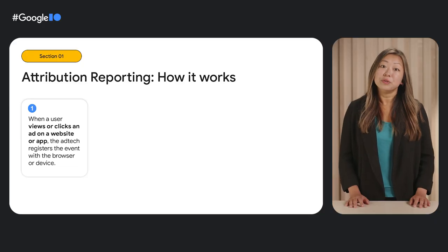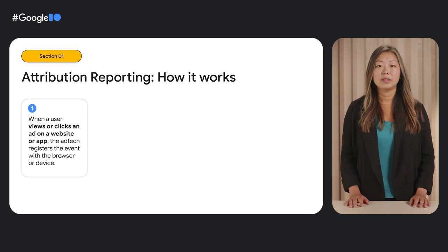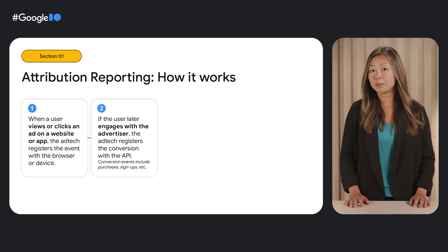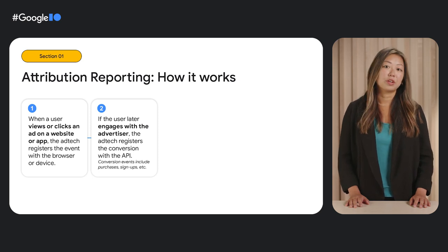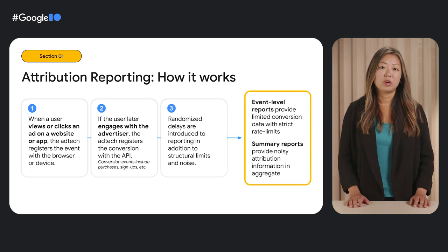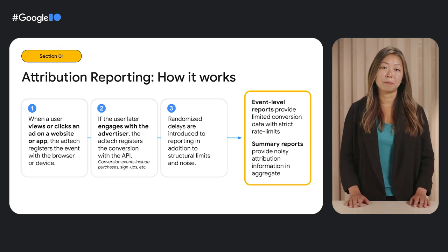So how does the Attribution Reporting API work? When a user views or clicks on an ad, the ad tech registers the event with the API, which is available on the Chrome browser or the Android device. If the user later engages with the advertiser — for example, makes a purchase on the advertiser's site or installs the advertiser's app — then the ad tech can register the conversion with the API. The API sends out event level and summary reports, which have randomized delays, structural limits, and noise built in as privacy-preserving measures.